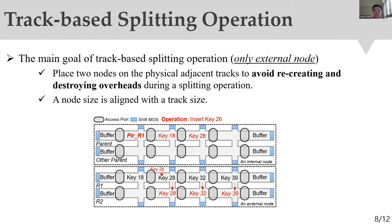The last component is the track-based splitting operation, which avoids recreating and destroying overheads during a splitting operation. When a node needs to be split, half of the node can be directly moved to the adjacent track without any recreating or destroying overheads. This design applies only to external nodes, since external nodes have a high frequency of splitting operations.